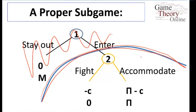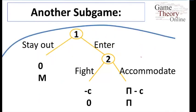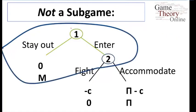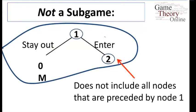We can think of that portion as an extensive form on its own and solve it to make predictions — that's one sub-game. Another sub-game is the entire game itself, starting from the node where player one moves and including all the game that follows. What's NOT a sub-game is taking part of the game where the first player moves but not including what follows after player two moves. We can't chop parts of the game off — once we start at a given node we have to include everything that follows. Leaving out terminal nodes means it's not a proper sub-game.